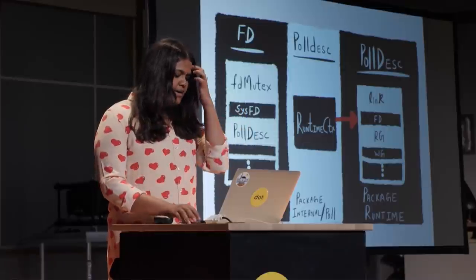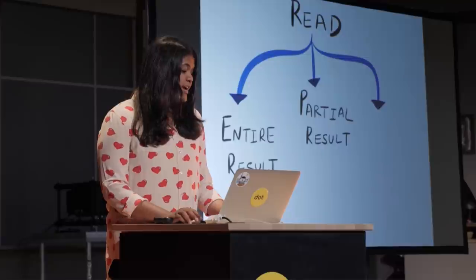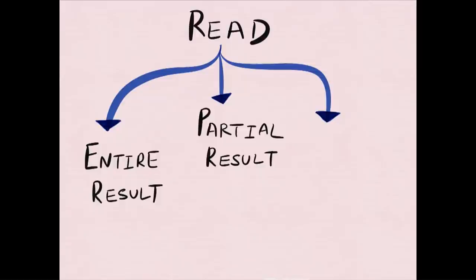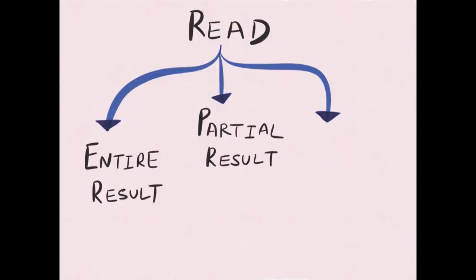Now that we have a base understanding of how we can monitor multiple file descriptors for I/O, let's understand what happens when a Go process tries to read data off a socket. There can be three outcomes when you try to perform I/O on any non-blocking socket. The first is that the call succeeds and you can read all of the data back, in which case the goroutine can proceed processing the received data. The second case is that we get a partial result — we haven't read all the bytes in the socket buffer, but the goroutine can still process that partial information. The third case, and the most interesting, is when you get an error — when the file descriptor you're trying to read from is not ready for I/O yet and there are no bytes that can be read.